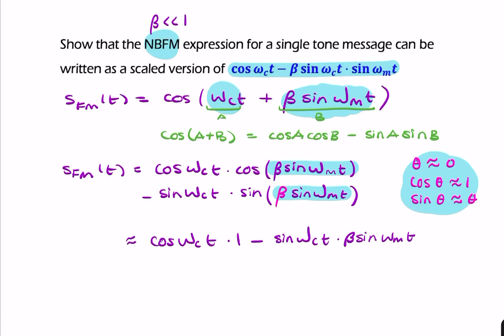Now I can rearrange it, and that gives me cos ωct - β sin ωct · sin ωₘt. This now looks identical to what we were asked for in the question. That is how you show that the expression for narrowband FM looks like that.